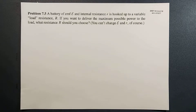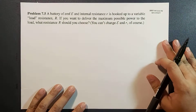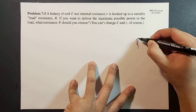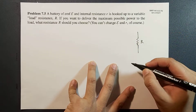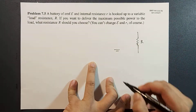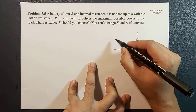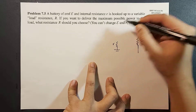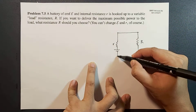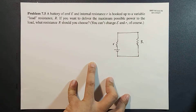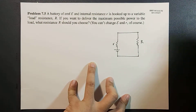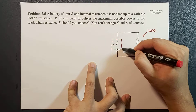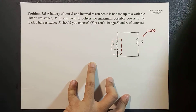Let's draw the circuit first. So we have a resistor R — this is your load — and then it is hooked up with a battery with internal resistance r. This is your full physical battery.